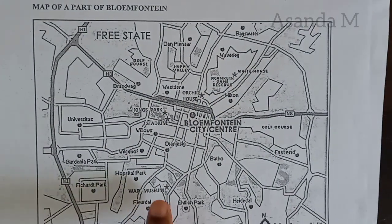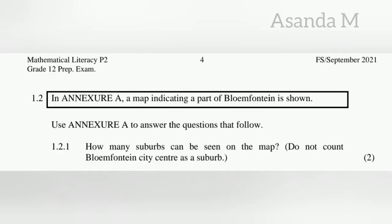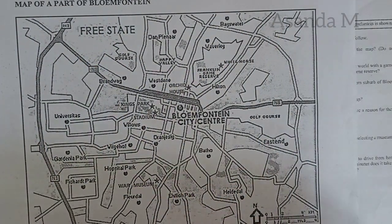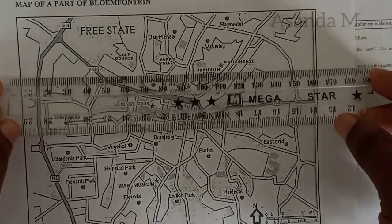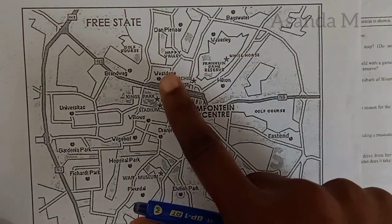I can see tourist attractions including Orchard House, Franklin Game Reserve, and the museum. Question 1.2.1 asks: how many suburbs can be seen on the map? Do not count Bloemfontein city center as a suburb. Always read the question carefully - don't miss the instruction to exclude Bloemfontein. When counting things scattered on a map, I use a ruler and go down systematically. There are 18 suburbs, excluding Bloemfontein.